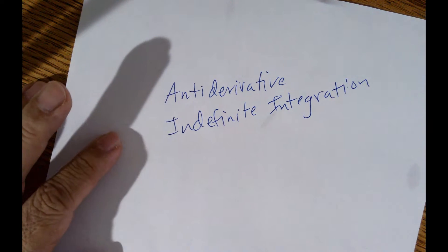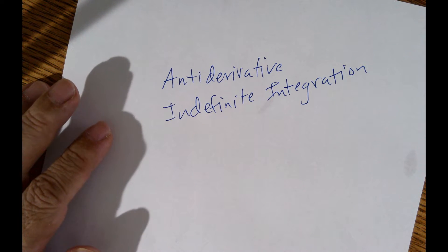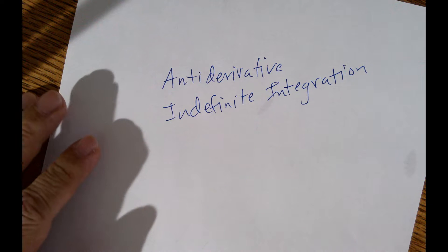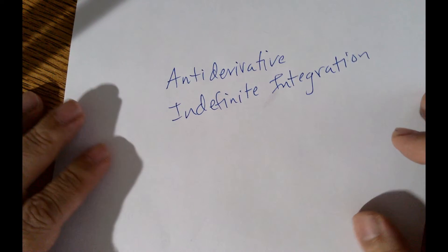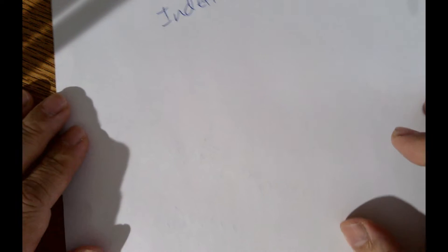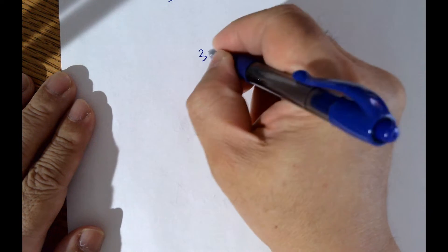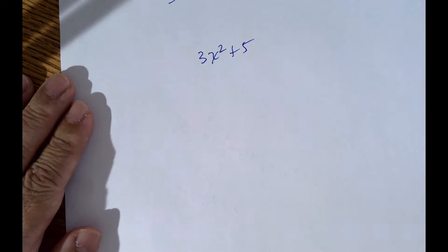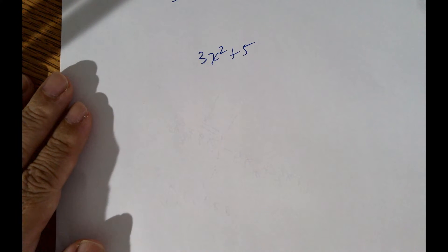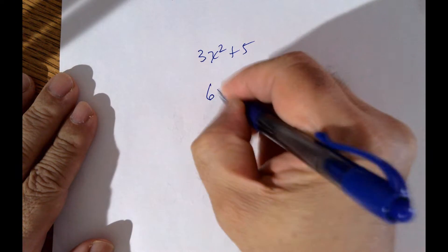These two mean the same thing. So what does it mean to be an anti-derivative? Let's talk about a derivative first. If I have a function like 3x squared plus 5, what is the derivative of this function? We say it's 6x.